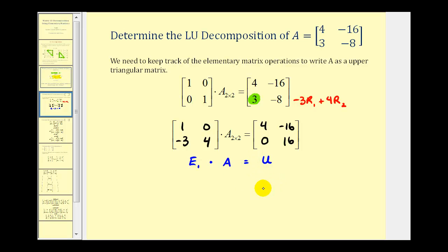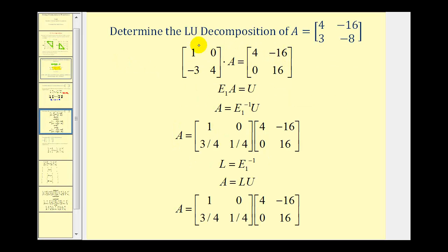We still have a little work to determine the LU decomposition. Here is E sub one and here is our upper triangular matrix U. If we solve this for matrix A, we multiply both sides by the inverse of E sub one. The inverse of E sub one is a lower triangular matrix, so we can let L equal the inverse of E sub one. Therefore we have our LU decomposition: A is equal to L times U, where here is matrix L and here is matrix U.